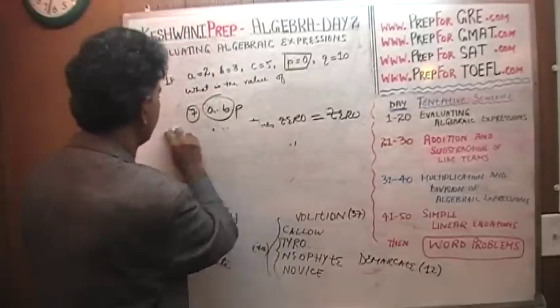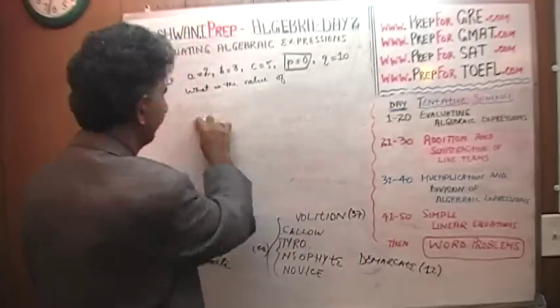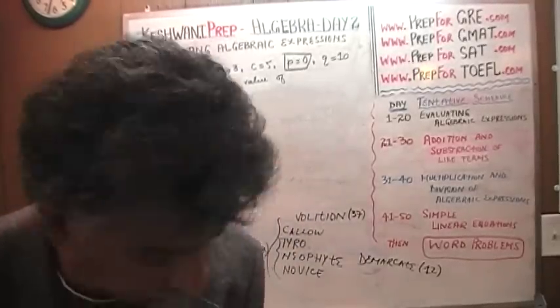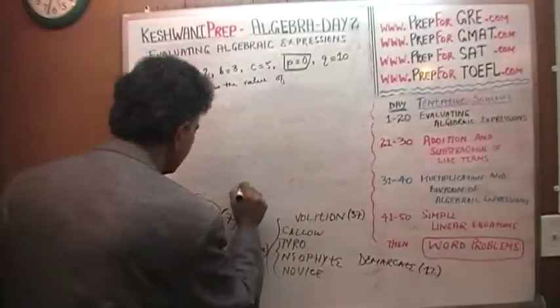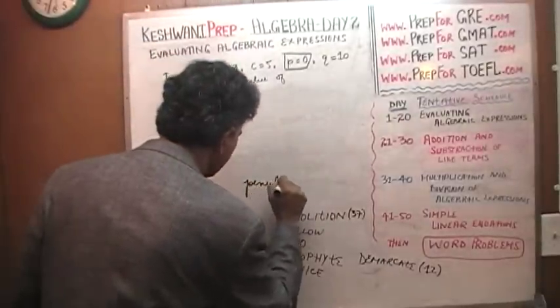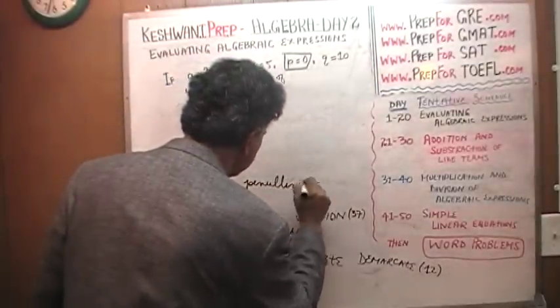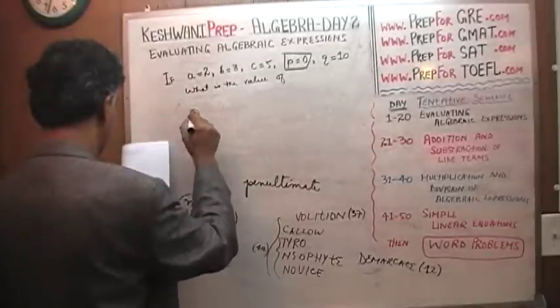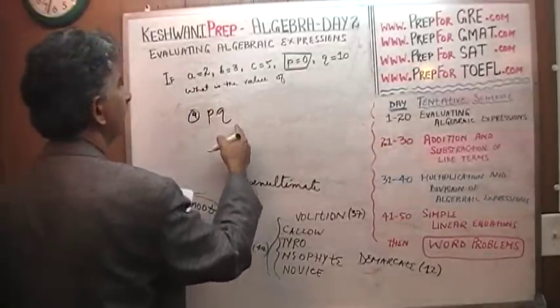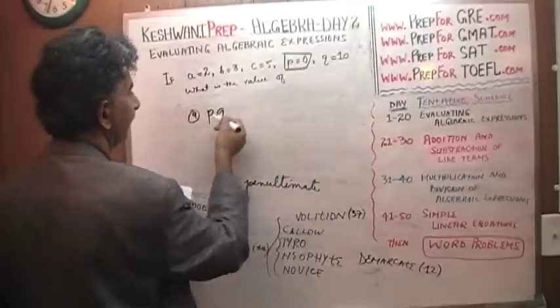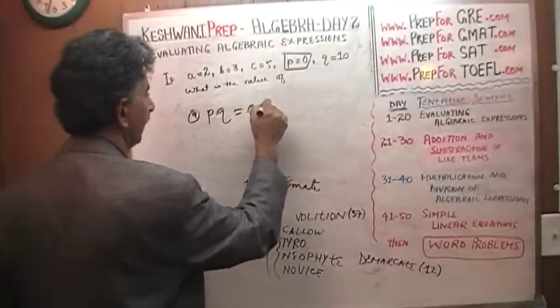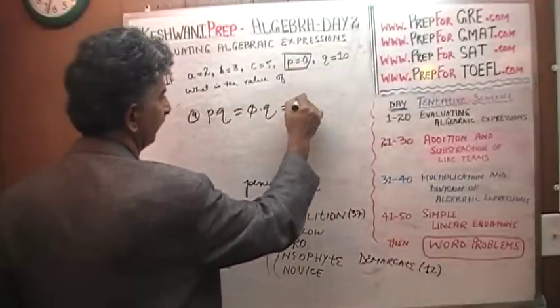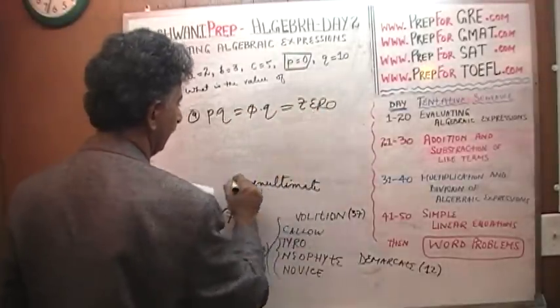Day number 9—oh sorry, problem number 9. The penultimate problem. P times q. P is—oh, again p is 0. So 0 times q, it doesn't matter what q is, it's just a big fat 0.